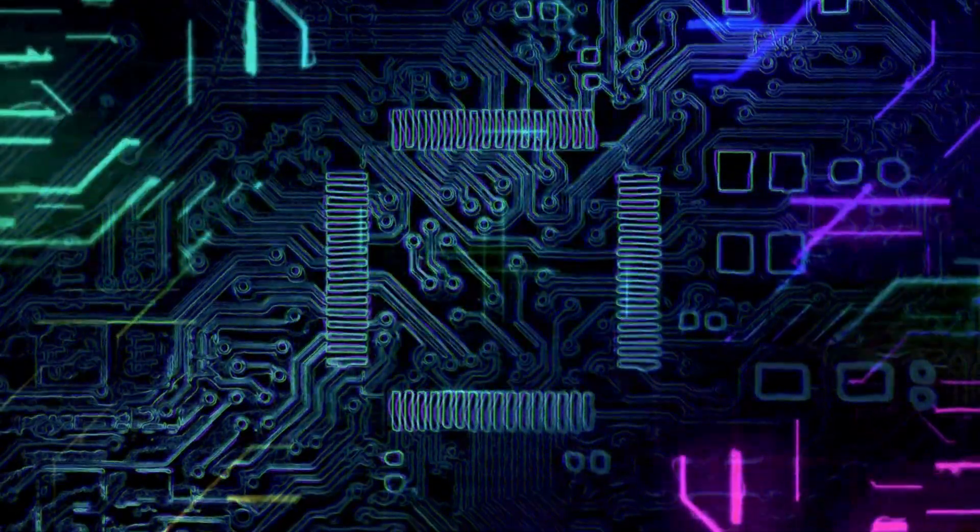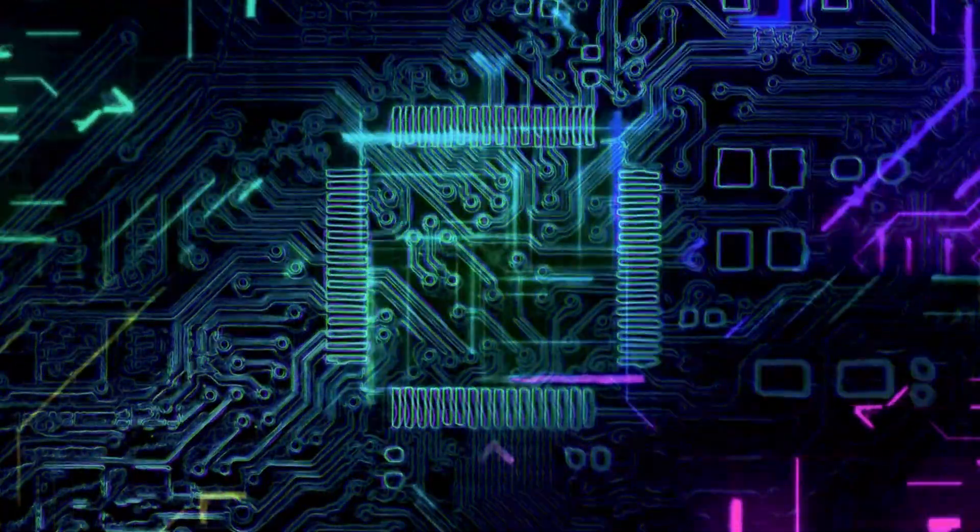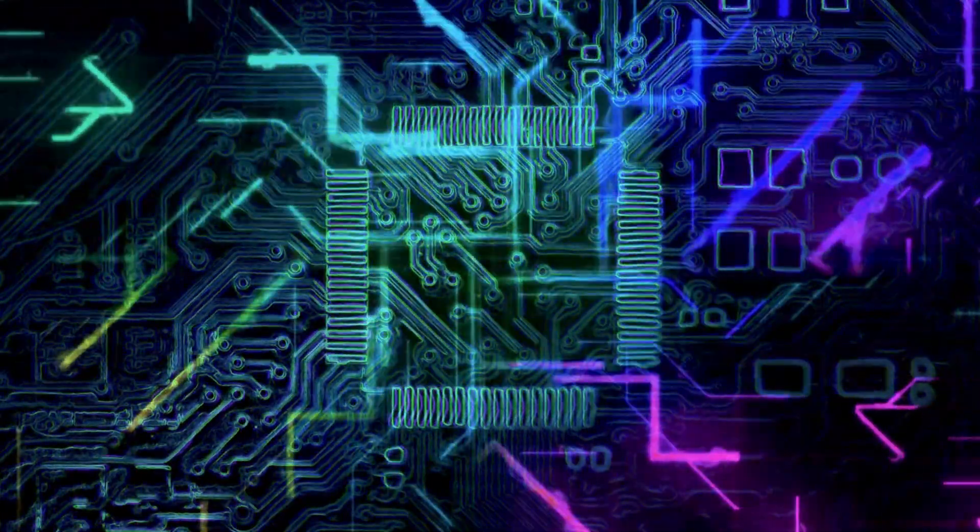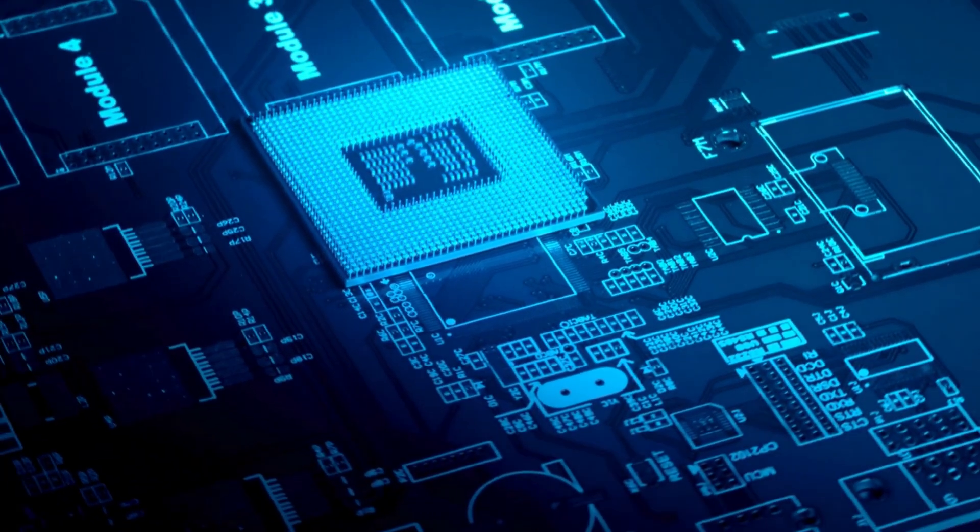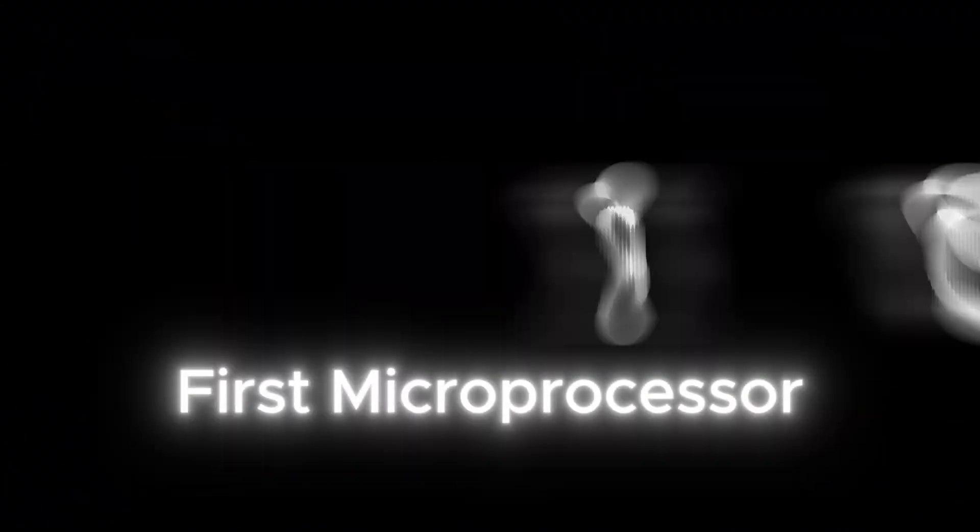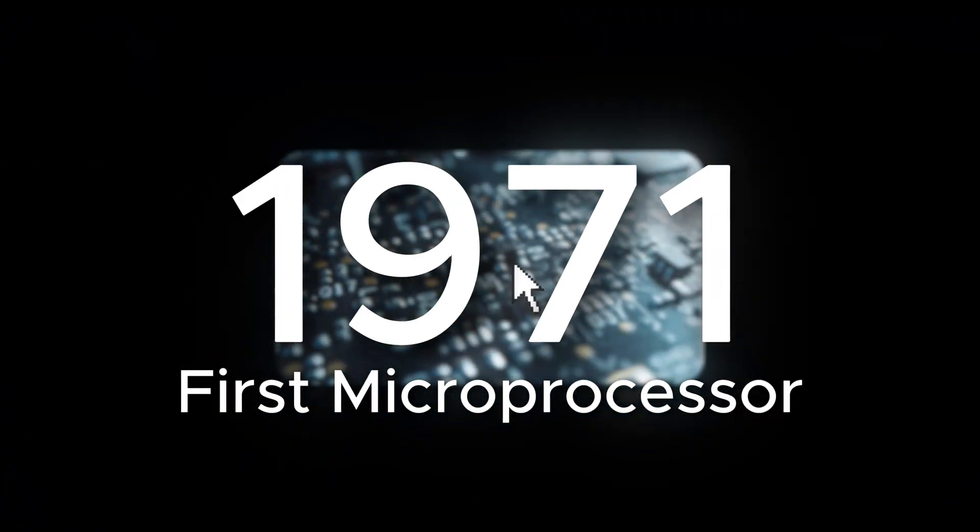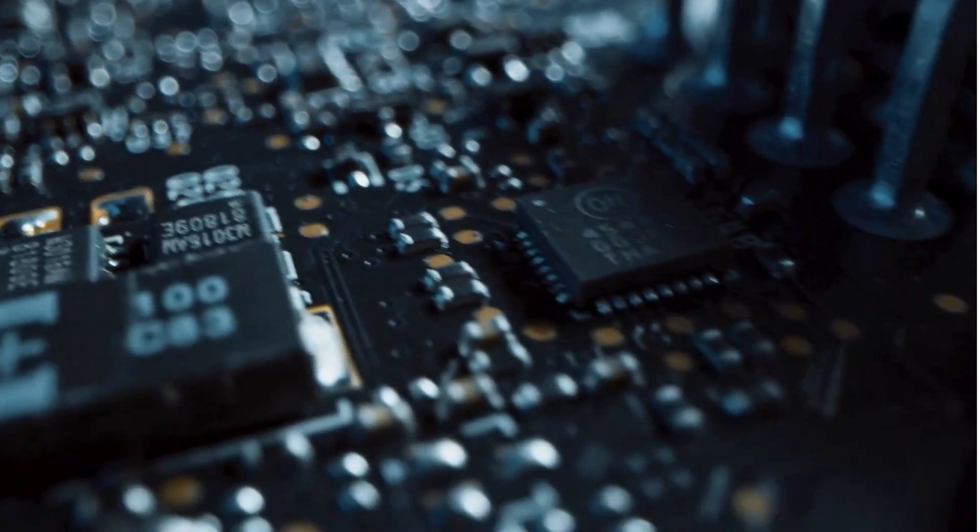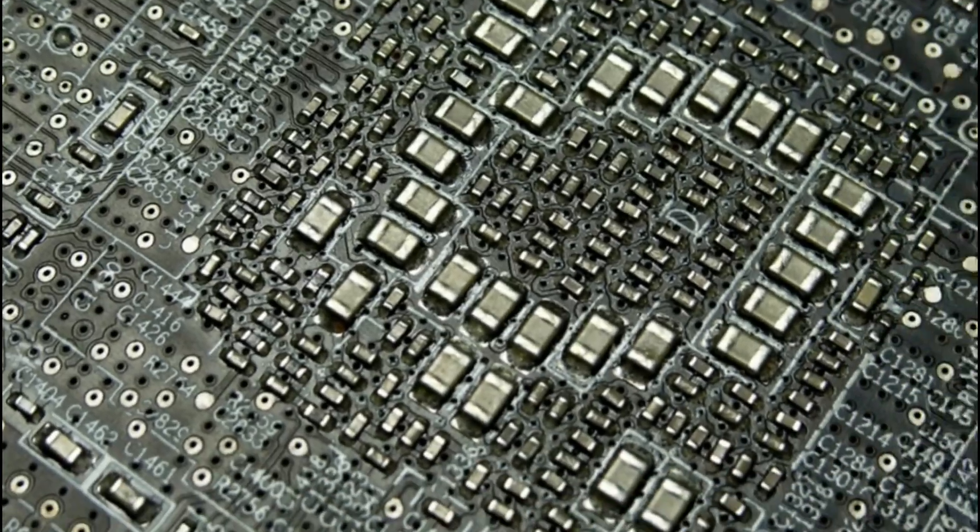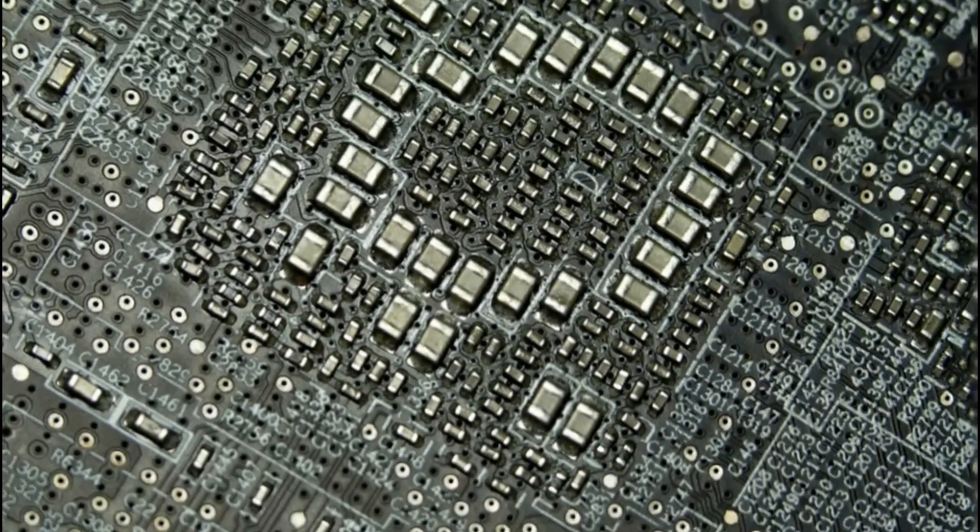At its core lies a microprocessor, a tiny chip performing billions of calculations every second. Without it, your phone is just a paperweight. And that chip, it's made of millions of microscopic switches called transistors, the basic building blocks of digital logic.